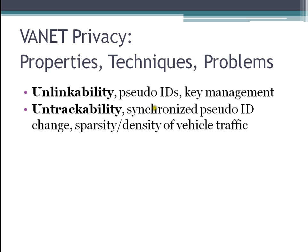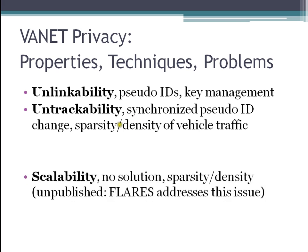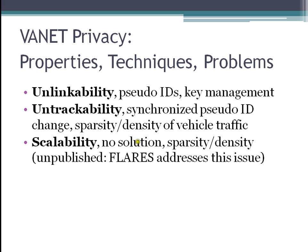We'll do another video on the math of this later. The problem with the synchronized pseudo-ID change technique is that if traffic is dense, it works great, but if traffic is sparse, it does not. If there's only one car changing its ID, you haven't really achieved any untrackability — somebody could point an antenna at your house and track you as long as you're not within range of a bunch of other cars. Scalability is an open question. I've come up with a method called FLARES which deals with scalability, but it has other problems.